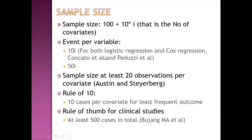Sample size consideration. There are various publications for recommended sample size. Sample size should be 100 samples plus 10 multiplied by number of covariates. Another rule is the events-per-variable rule: the 10 EPV rule, used for both logistic regression and Cox regression, and the 50 EPV rule. Another rule is at least 20 observations per covariate. The rule of 10 is 10 cases per covariate for least frequent outcomes. The rule of thumb for clinical studies is at least 500 cases in total.